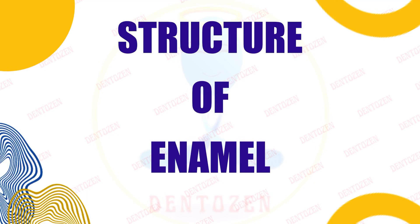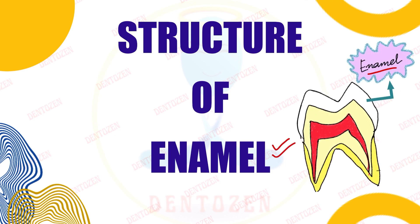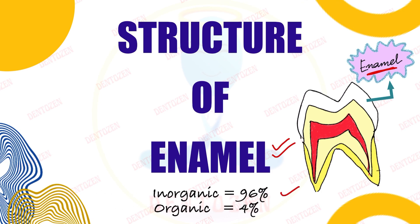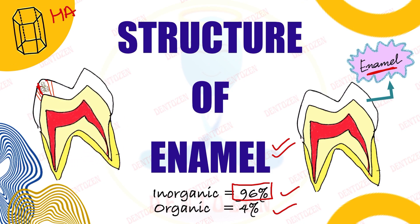Hello everyone, welcome back to Dendrozen. Today we are here with a new video on enamel, where we are going to learn the structure of enamel. Enamel, which is the outermost layer of the tooth, is made up of two components: inorganic component and organic component. The inorganic material, which constitutes about 96 percent of the enamel, is made up of hydroxyapatite crystals.